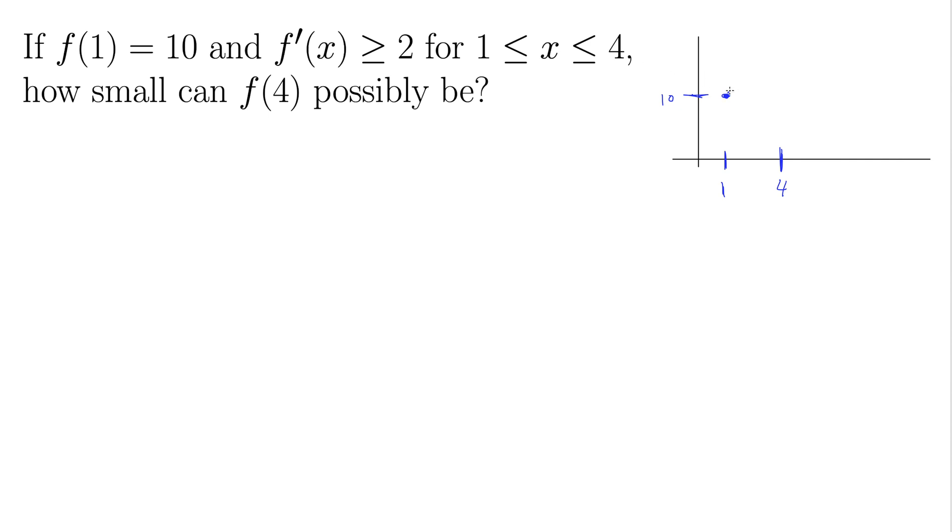What it tells us is for all the points in between there, the derivative is always greater than or equal to 2. So I don't know what's going on here, but it's definitely going up. 2 is pretty steep. So we can imagine this going something up like so for 4.